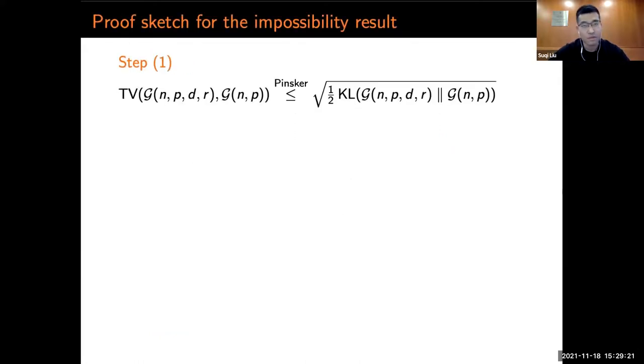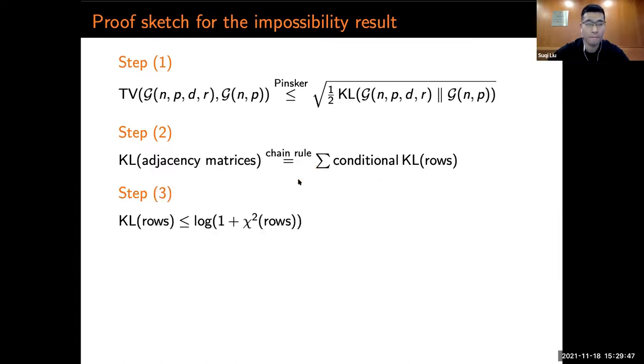For the rest of the couple minutes, I'll just go over the proofs briefly. We start with the impossibility result. In the first step, we convert the total variation distance between the graphs to the KL divergence using a Pinsker inequality. Then, by tensorizing the matrix, we can rewrite the KL divergence as the sum of a conditional KL of the rows by chain rule.